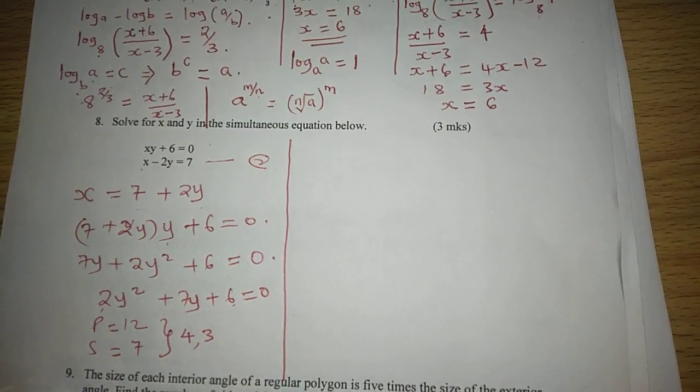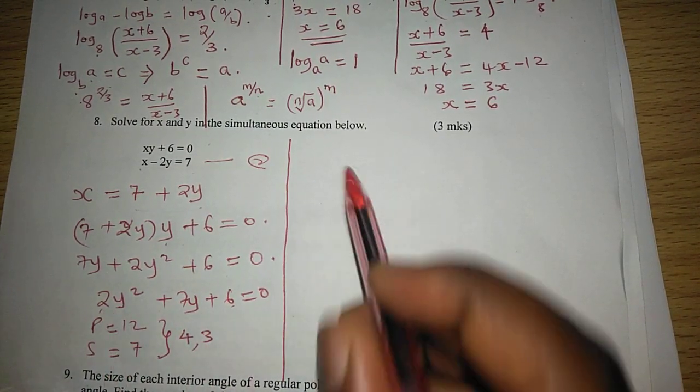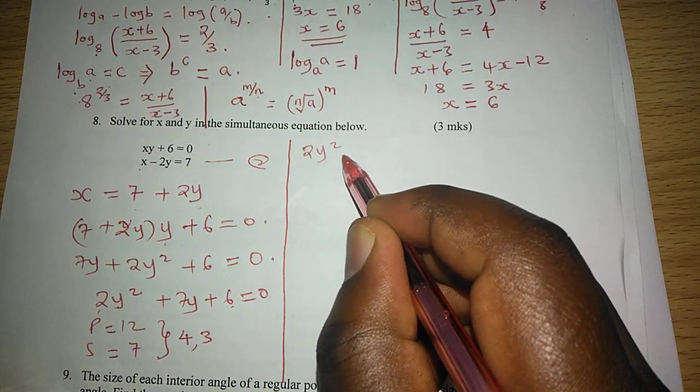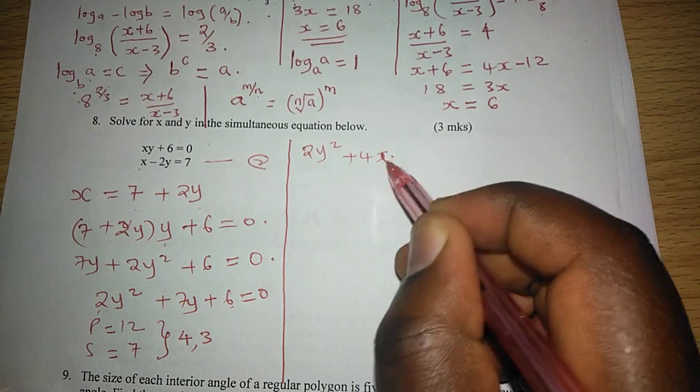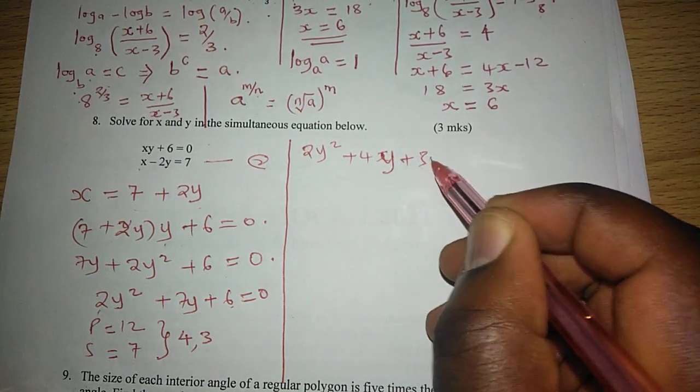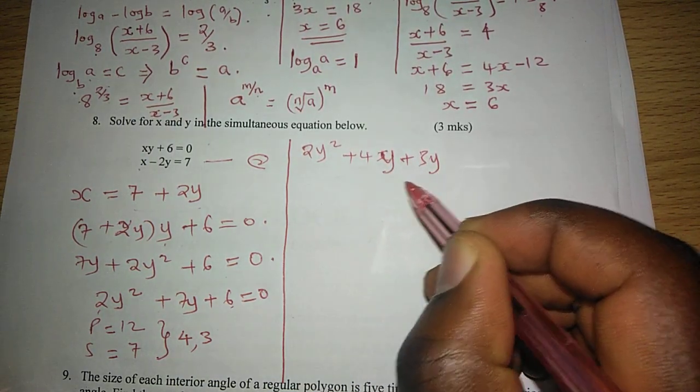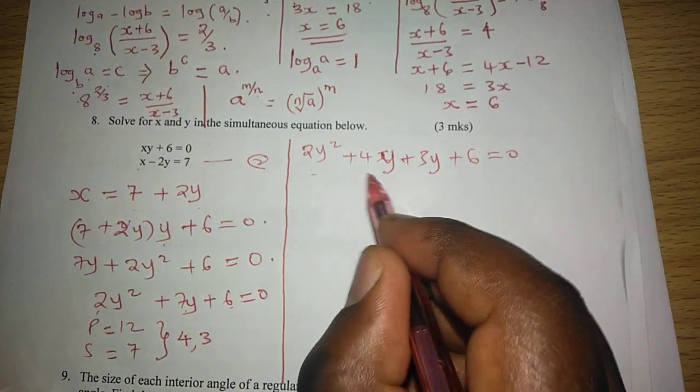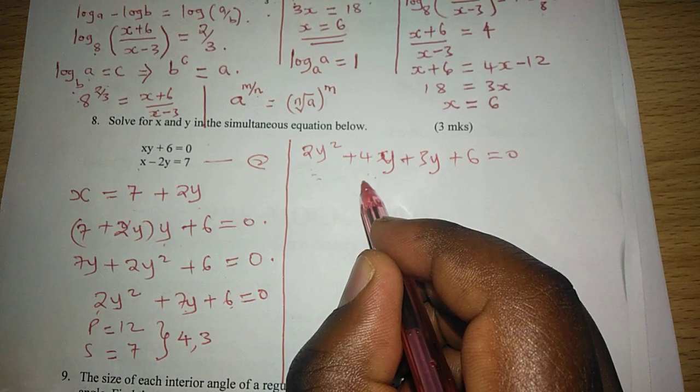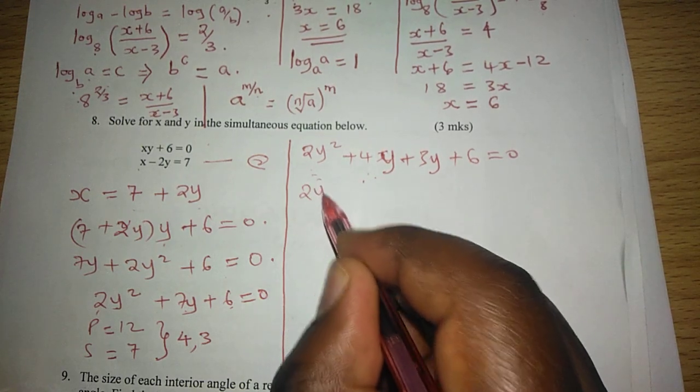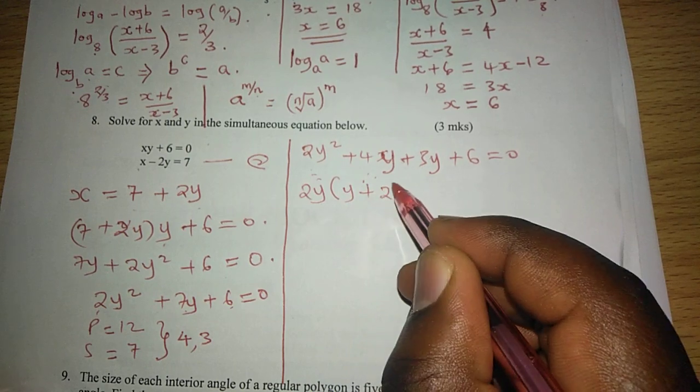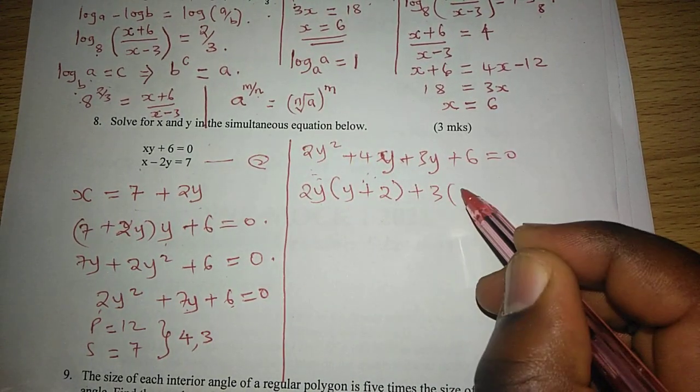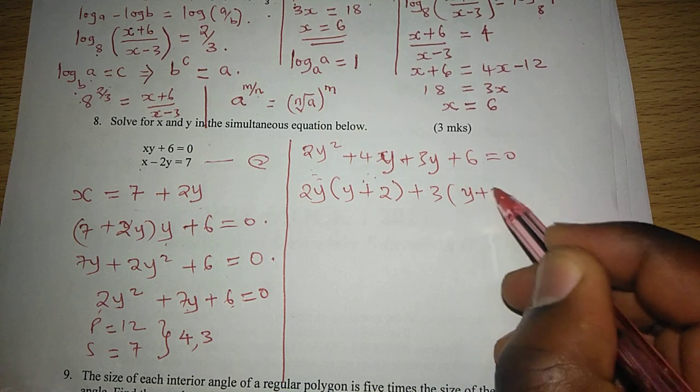We can proceed to factorize here. 2y squared, instead of 7y we can have 4y and 3y, that has replaced 7y plus 6 equals to 0. Factoring what is common in each of two terms, we have 2y in the first, such that y plus 2. So we have 2y times y plus 2, then plus 3 times y plus 2 here again.